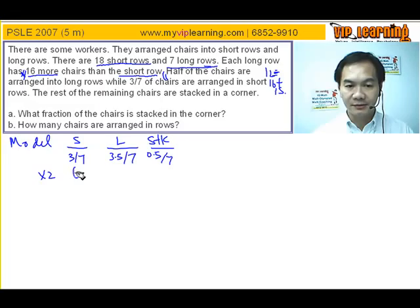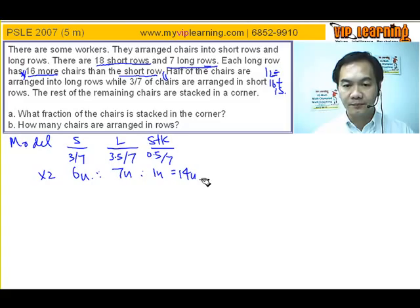3 times 2 giving me 2 times 3 is 6. Let's call it 6 units. This would be 7 units. And hence this would be 7 units. The total would be 14 units.